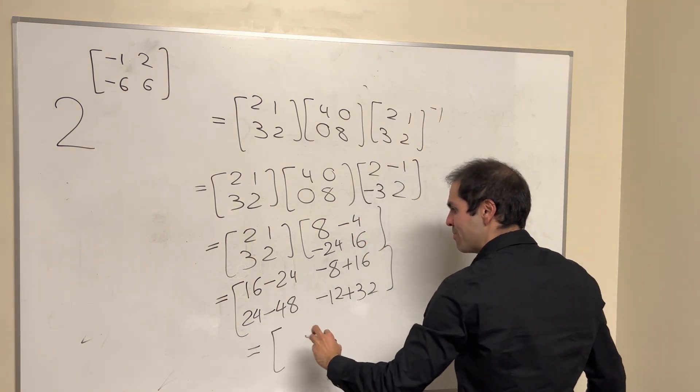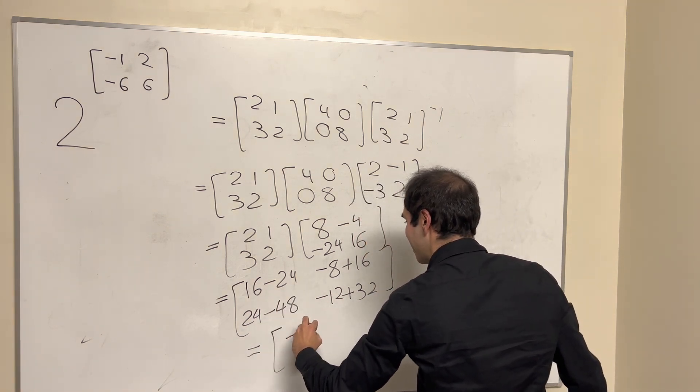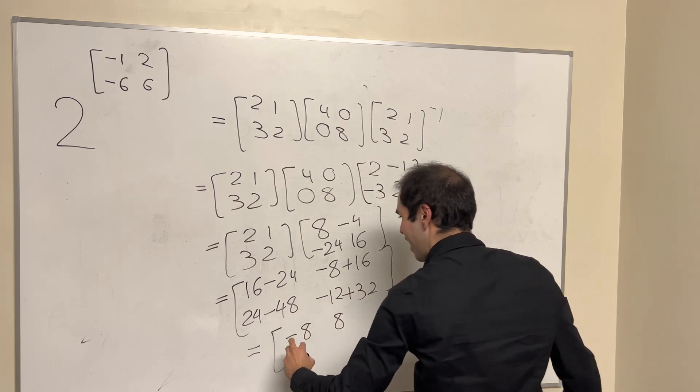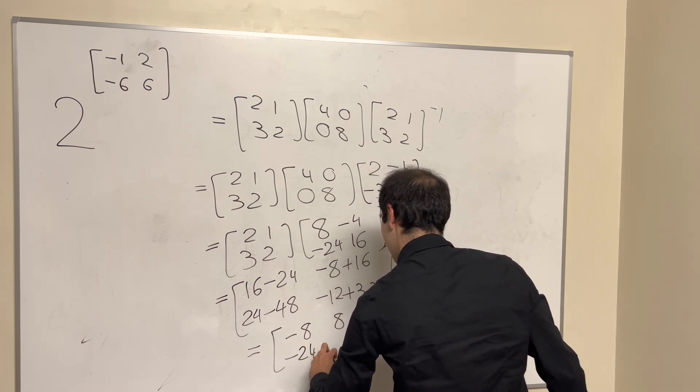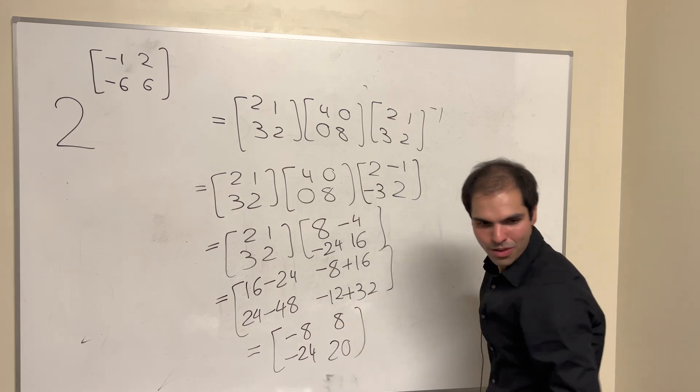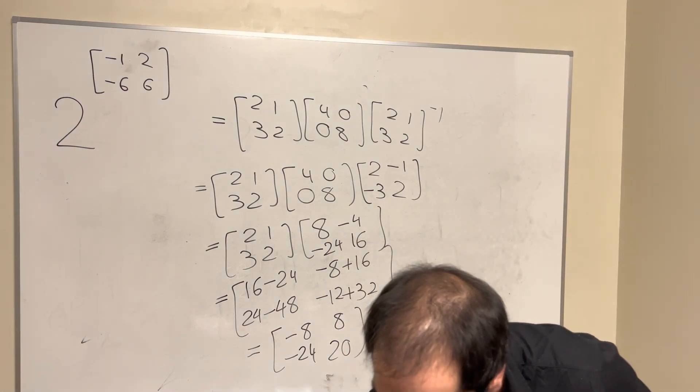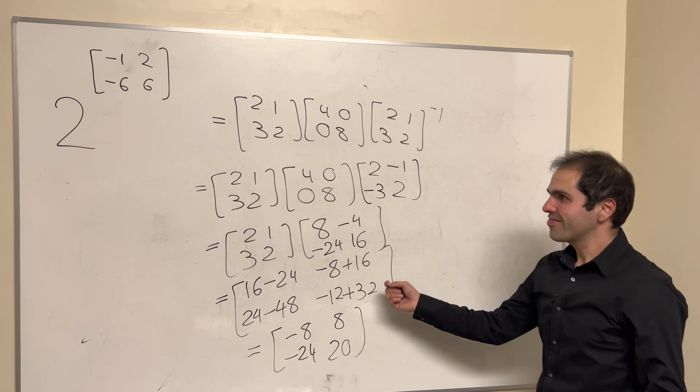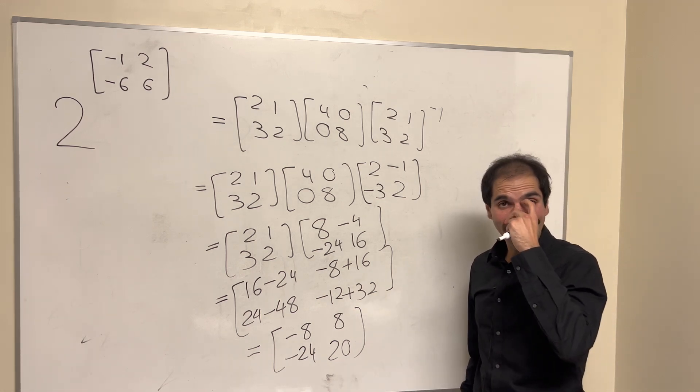And in the end, what you get is the following matrix, so I believe minus 8, 8, and then minus 24, and then 20. Let me just double check. Yeah, that's correct. Ta-da! So this is 2 to the A,